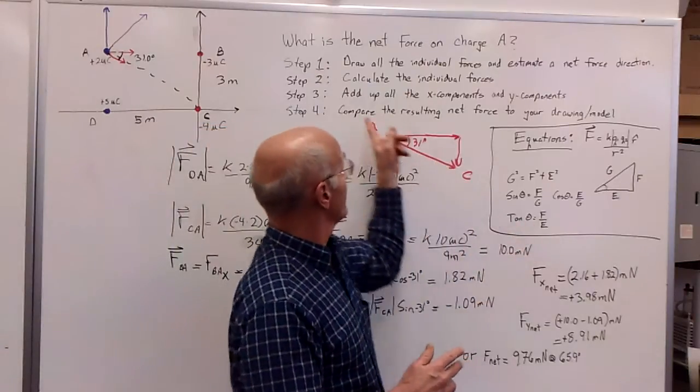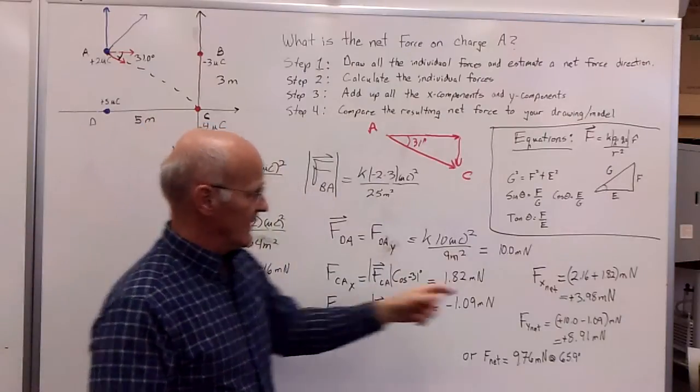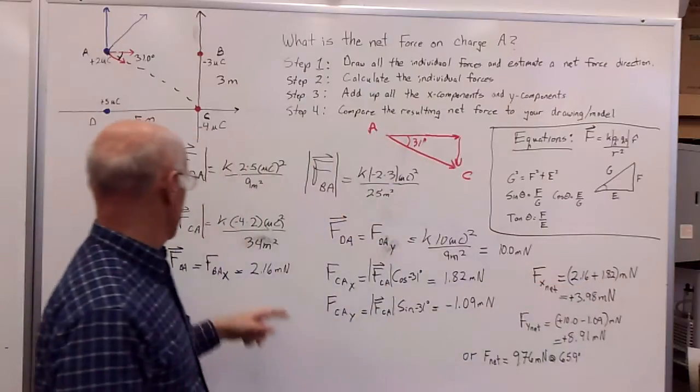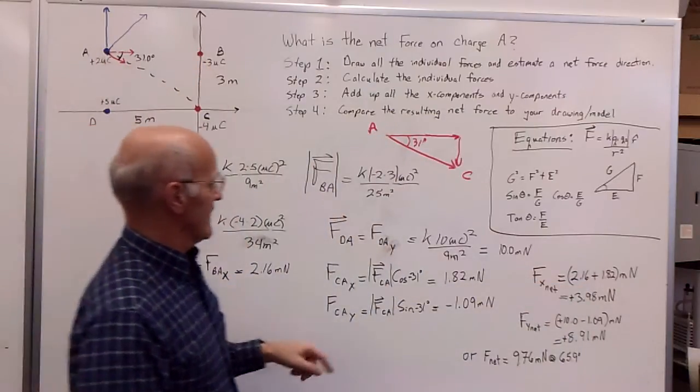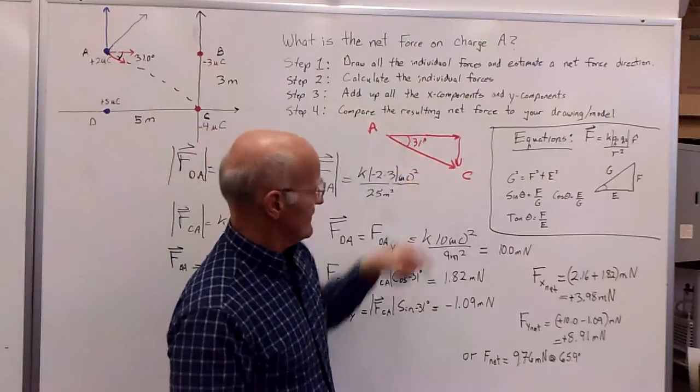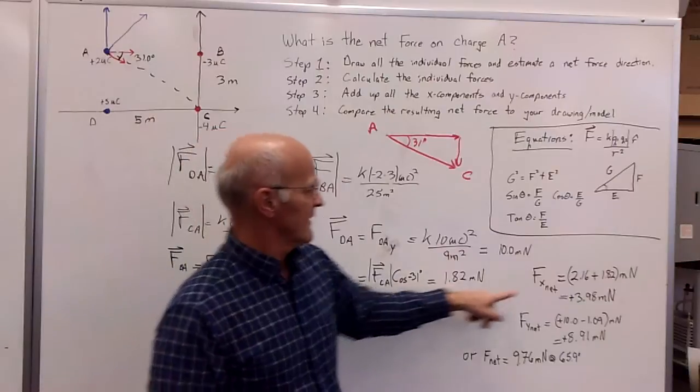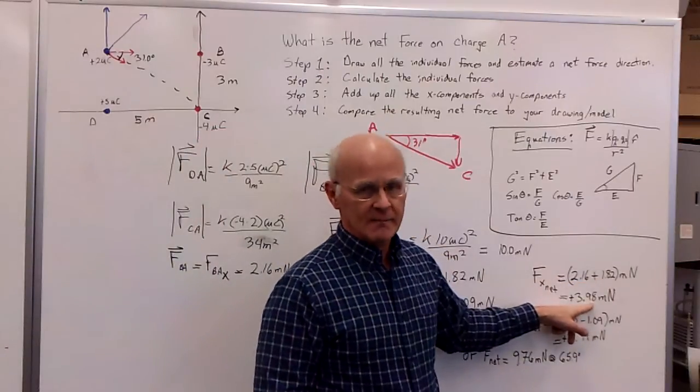Then, adding up all of these components now that we've got the individual components, I go ahead and add up my X components, taking my 2.16 that I got from my B to A, the simple one, and then I take that component of the AC interaction, and I add that, the 1.82 that I had over here, 2.16 plus 1.82, gives me 3.98 millinewtons.